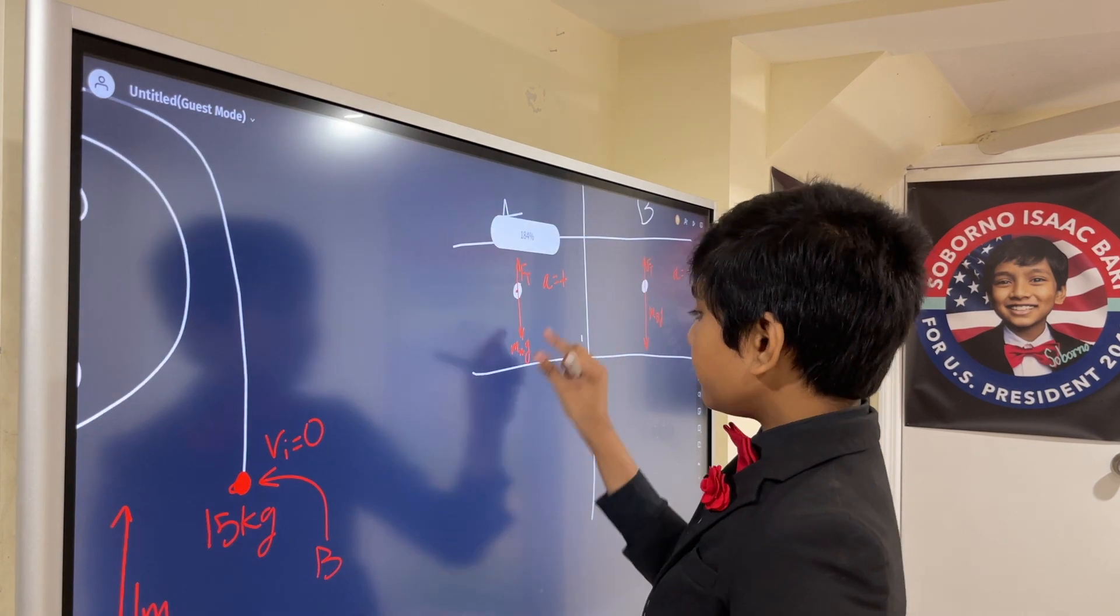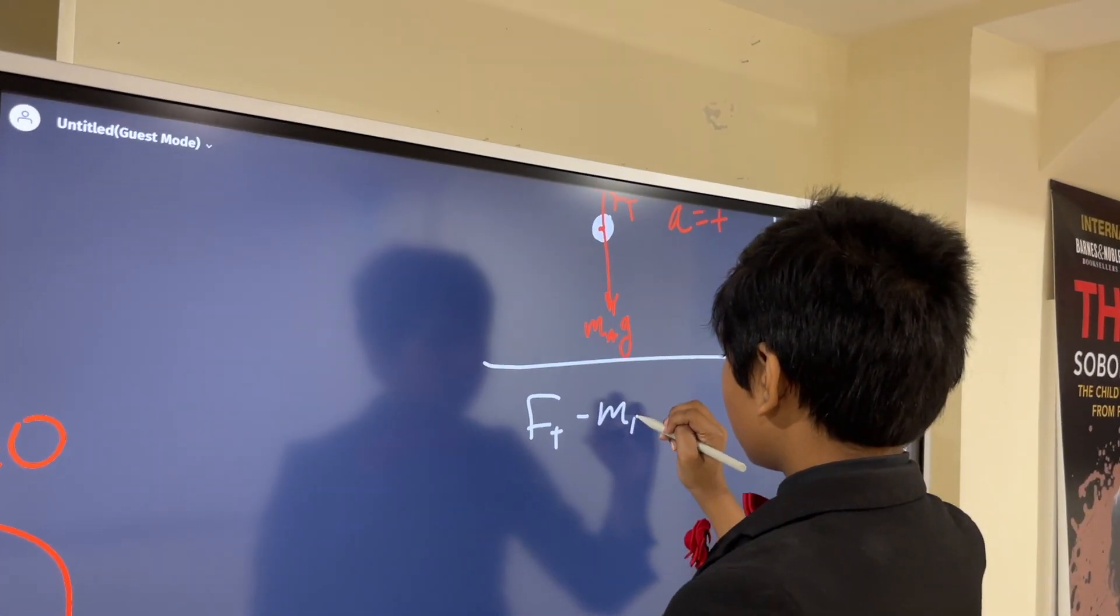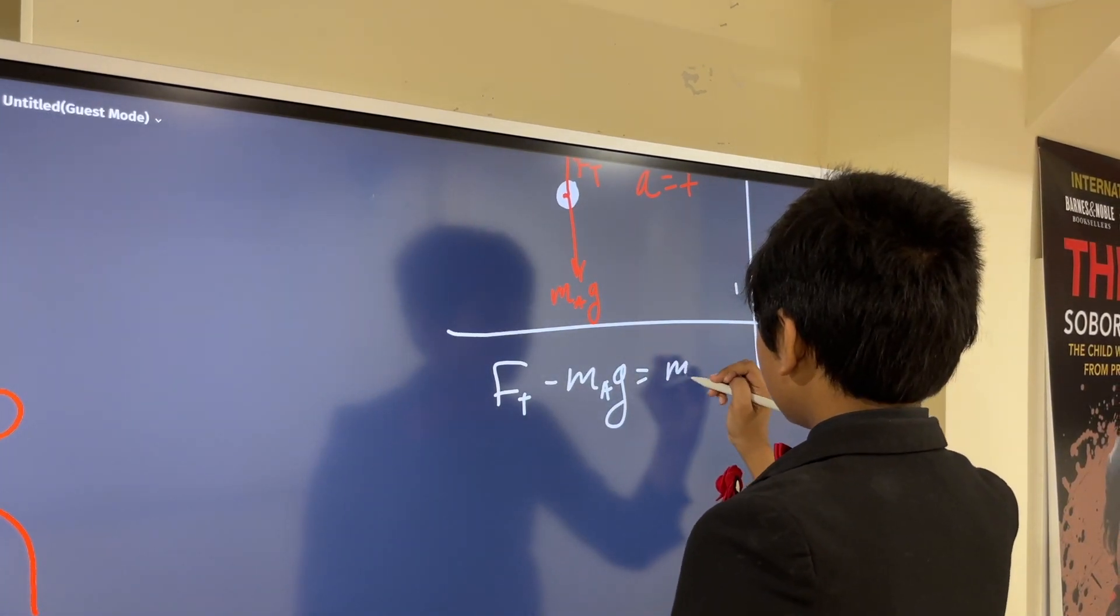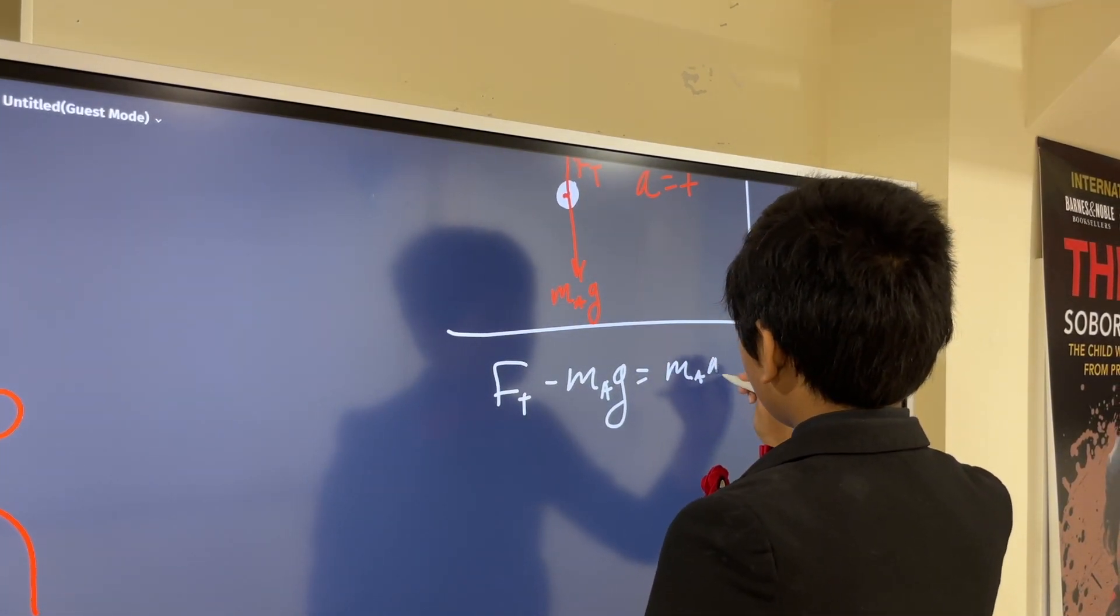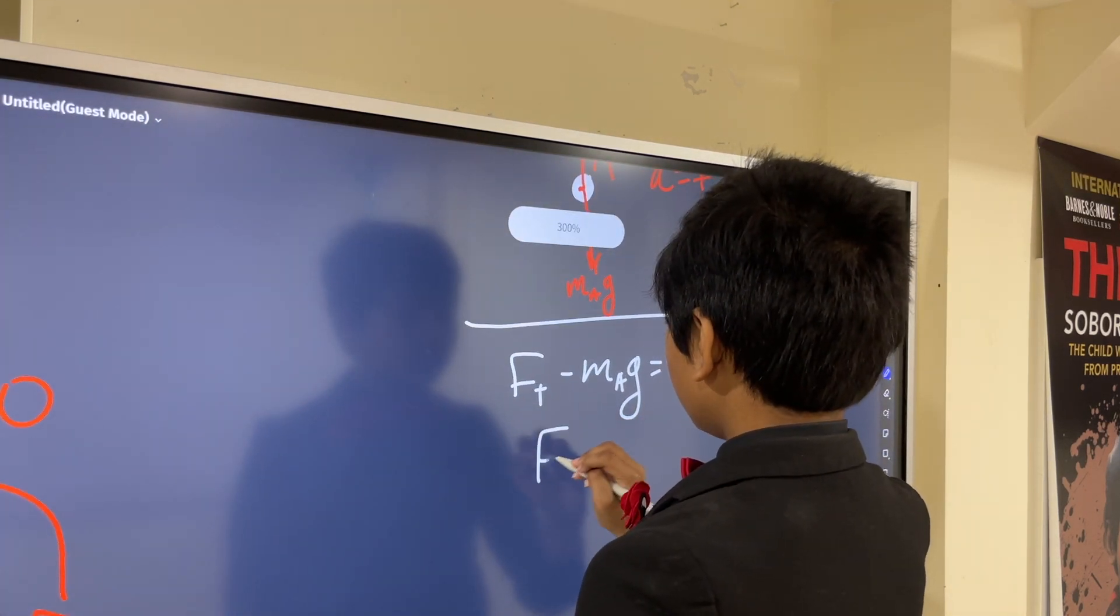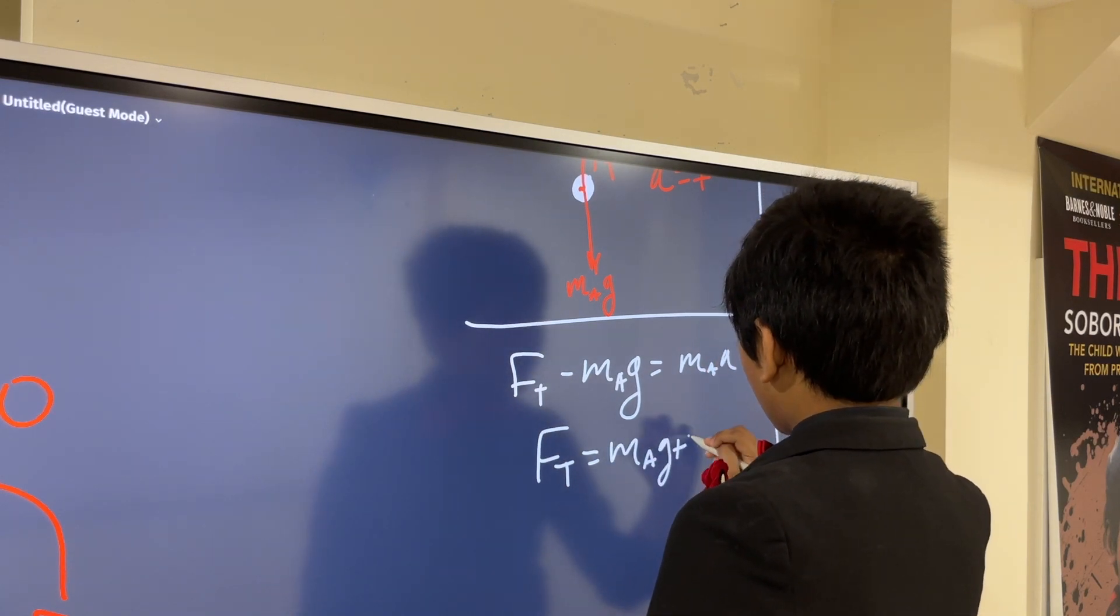So, FT minus MAG is going to be equal to MAA, and A here is positive, so no sign changes. So, here, FT is simple. MAG plus MAA.